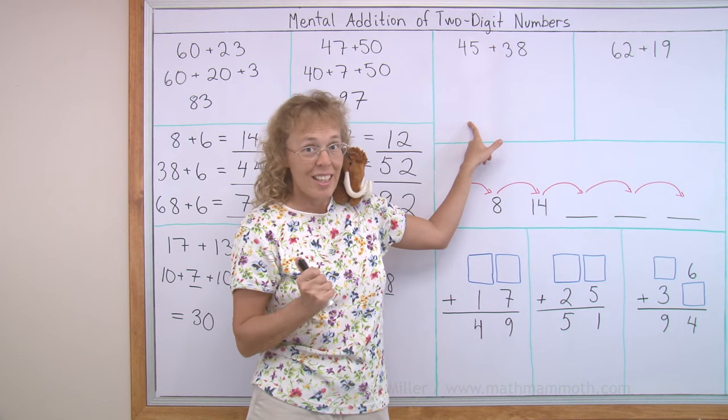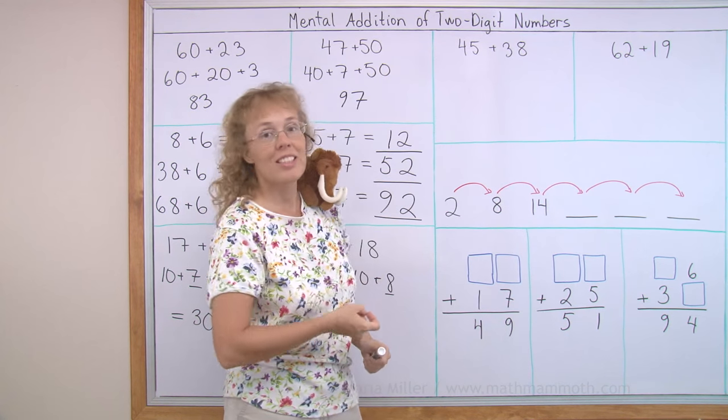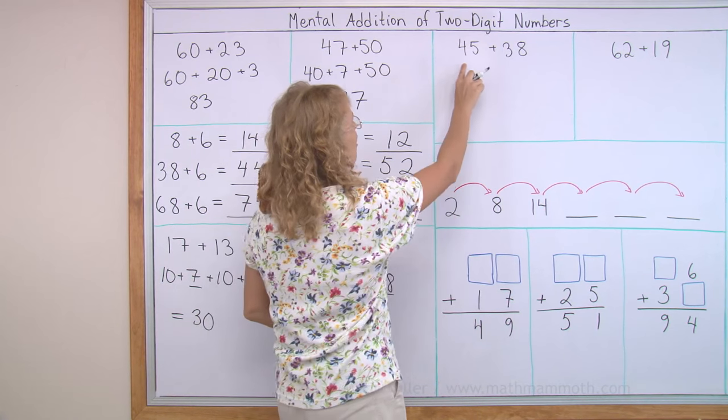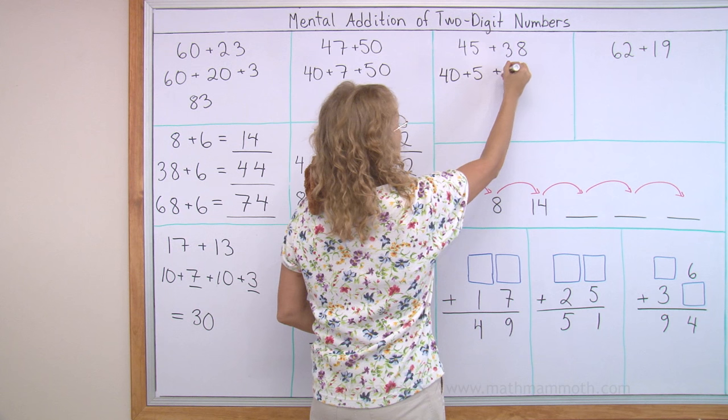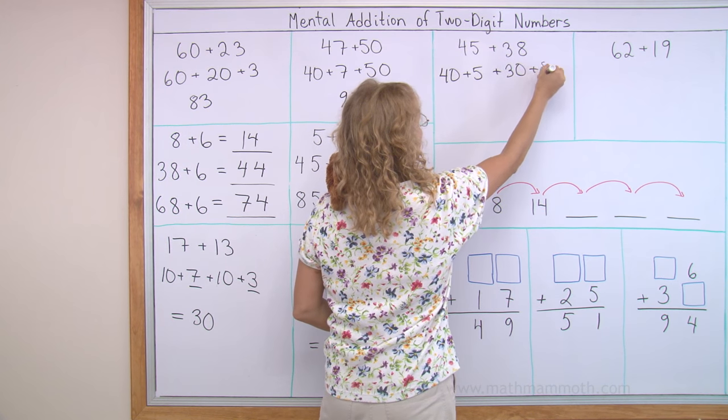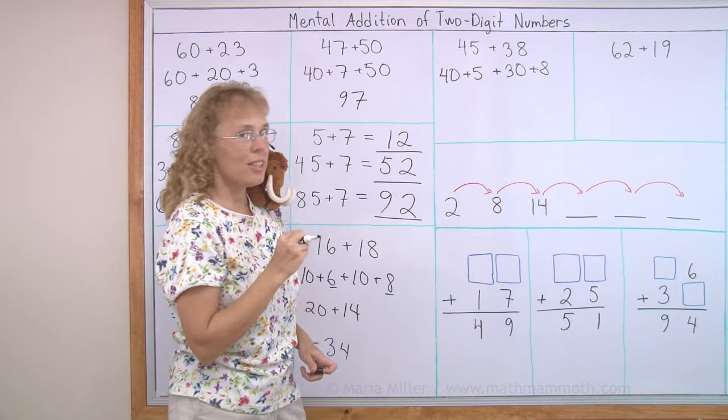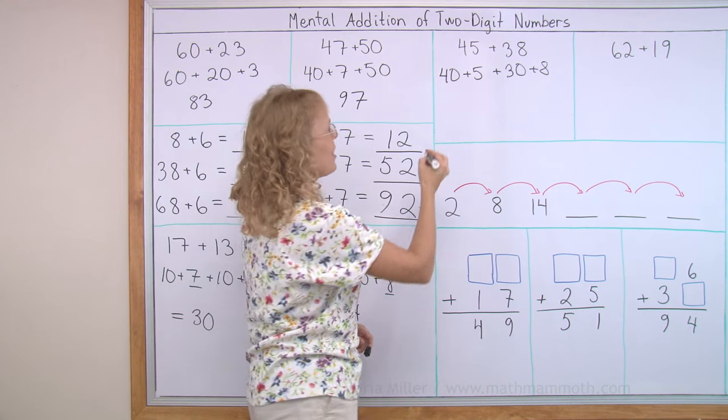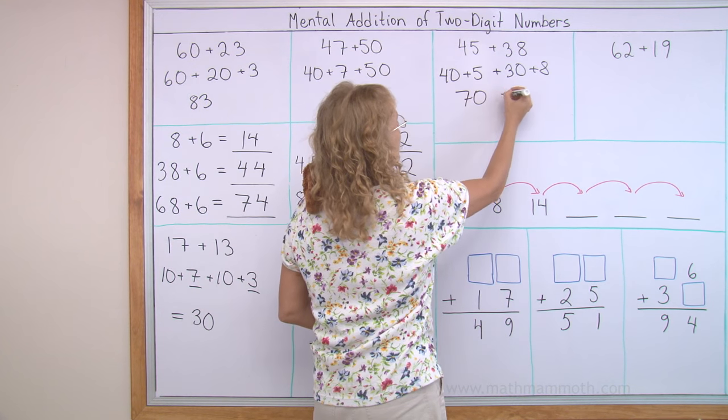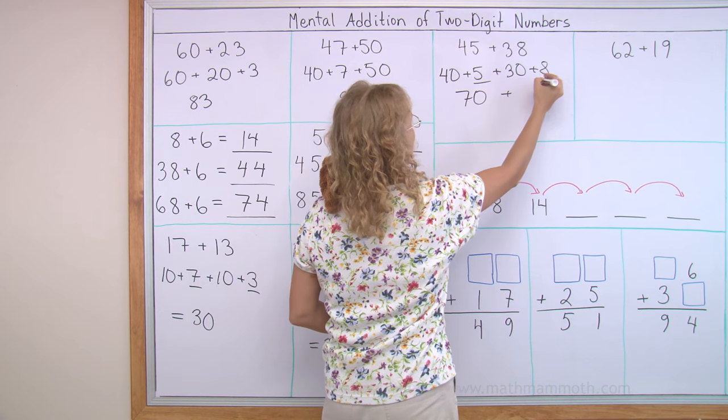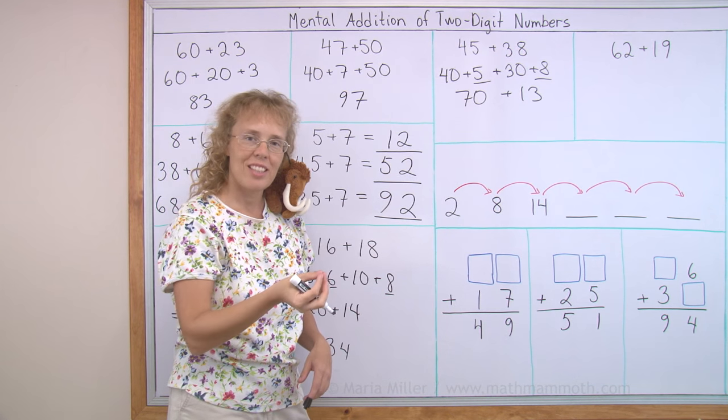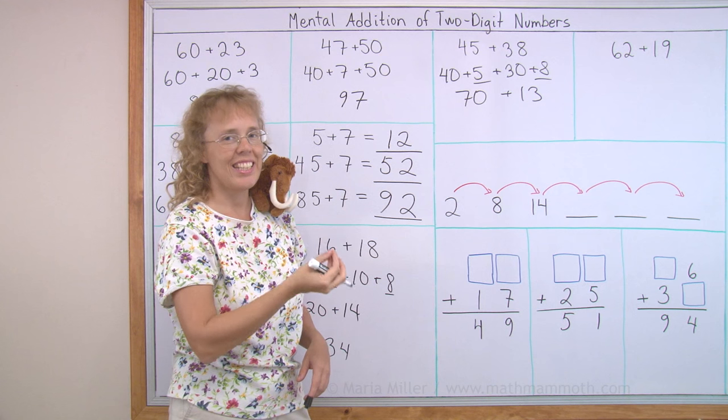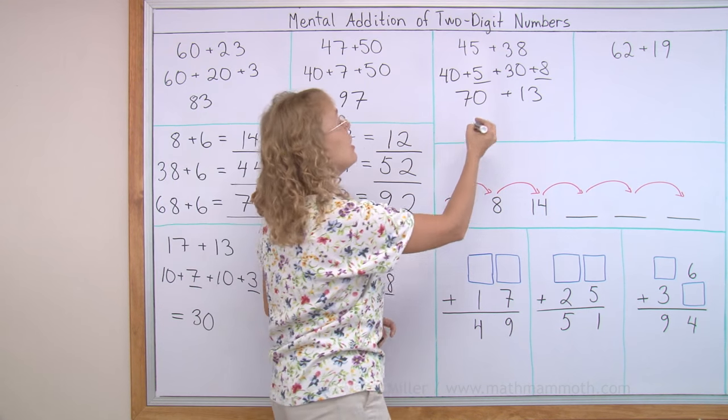We're going to use the same idea here. The numbers are just bigger. I think of this as 40 and 5. And this one, 30 and 8. And then, we add 40 and 30. That's 70. And then, 5 and 8. You remember how much that is. It's 13. And now, you add 70 and 13, which is 70 and 10 and 3 or 83.